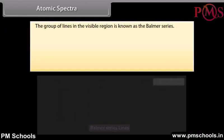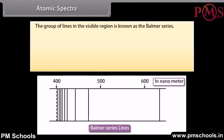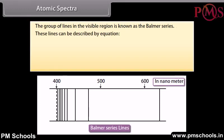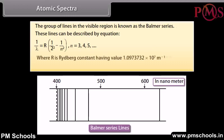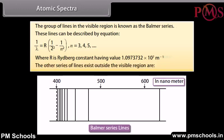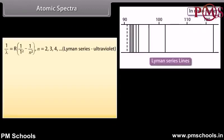The group of lines in the visible region is known as the Balmer series. These lines are described by the equation: 1/λ = R(1/2² − 1/n²), where n = 3, 4, 5, and so on. R is the Rydberg constant with value 1.0973732 × 10⁷ per meter.